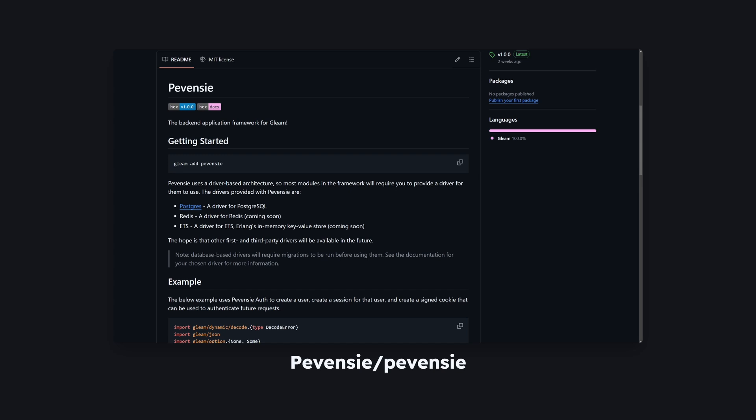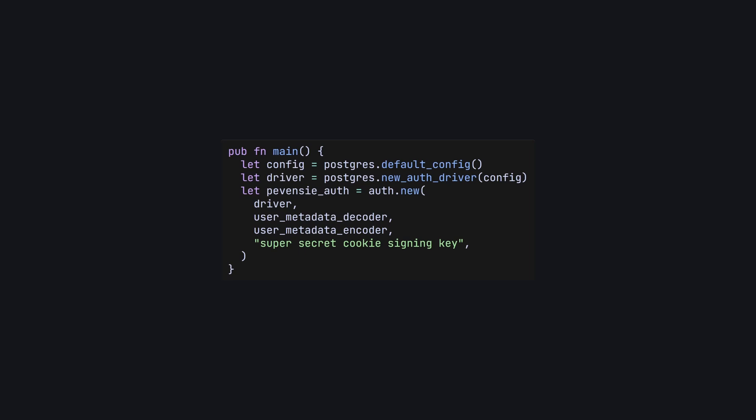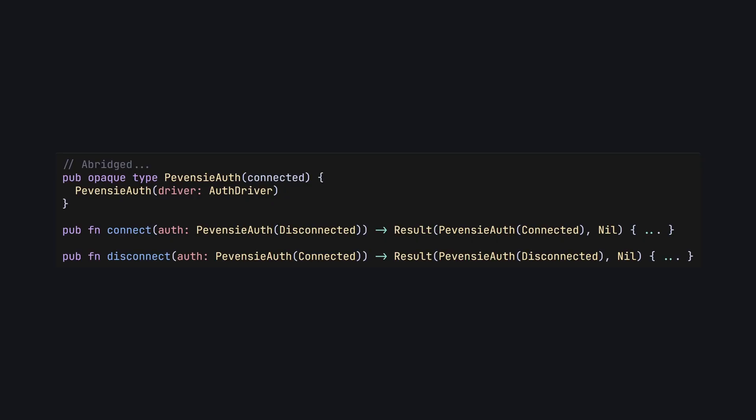Secondly, I use phantom types in my Gleam framework, Pevensey. It's a backend application framework that currently provides auth and caching capabilities and has more features planned. To avoid restricting users to a particular tech stack, Pevensey uses an abstraction called a driver, allowing users to choose their backend for a particular Pevensey module. For example, you may choose to use Postgres with Pevensey auth and Redis with Pevensey cache, or you might choose to use SQLite for both. Importantly, Pevensey drivers have the concept of a connection status, which is enforced at compile time with phantom types. Logically, you can't fetch a user from your database if you don't have a database connection, but you might want to choose between opening a new connection on every request or using the same connection for the lifetime of the program. Pevensey modules have a connected phantom type, and drivers implement connect and disconnect functions. Other functions in Pevensey modules will then only accept a connected driver, meaning you can't use the wrong one, giving users full control over their connection management strategy.